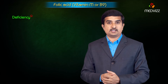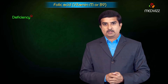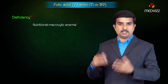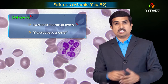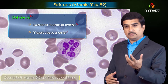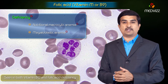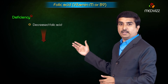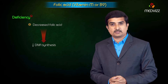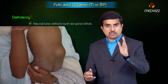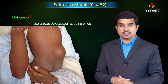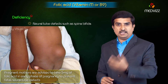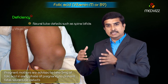Deficiency of folic acid can cause nutritional macrocytic anemia and megaloblastic anemia. A megaloblastic picture is seen in both vitamin B12 and folic acid deficiency. Due to decreased folic acid there is reduced DNA synthesis, hyperhomocysteinemia, and neural tube defects such as spina bifida.